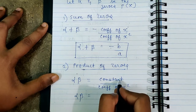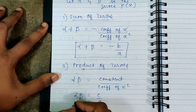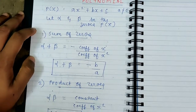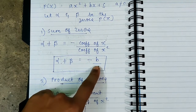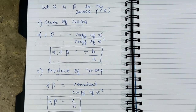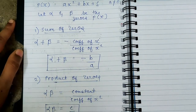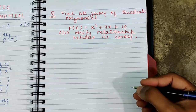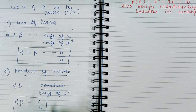The second relation is: product of zeros, alpha × beta = (constant)/(coefficient of x²) = c/a, where c is the constant term and a is the coefficient of x². So for a quadratic polynomial with two zeros alpha and beta, the two relations are: sum of zeros = -b/a, and product of zeros = c/a.